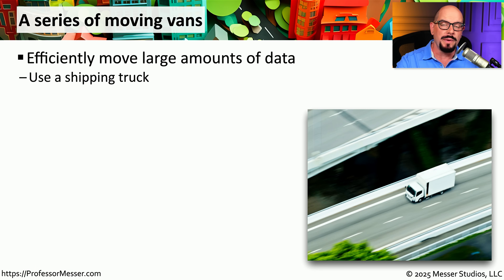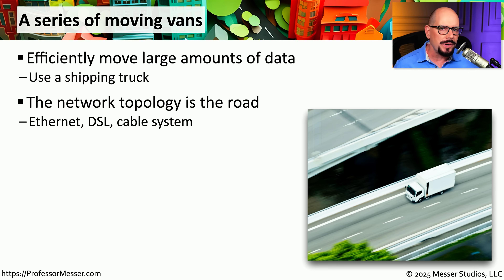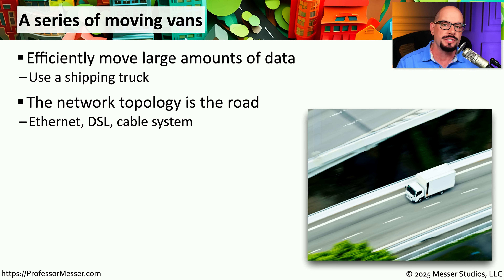Our networks are designed to move information from one device to another device, and there is a lot of information that goes across our modern networks. We usually refer to these as Ethernet networks, wireless networks, DSL networks, and other types. And from IP's perspective, it really doesn't matter what method you're using for the transportation.